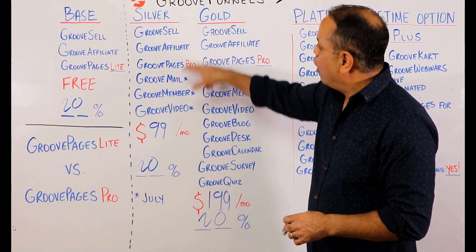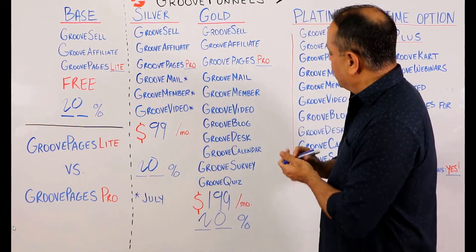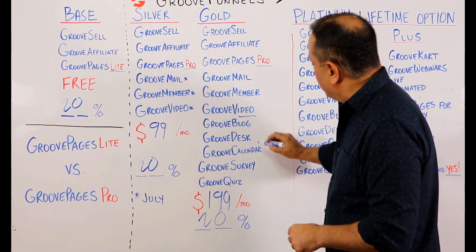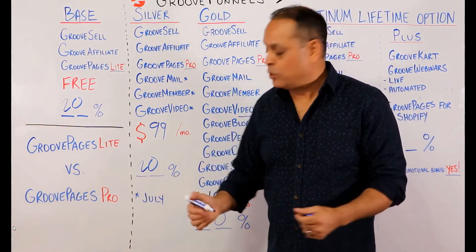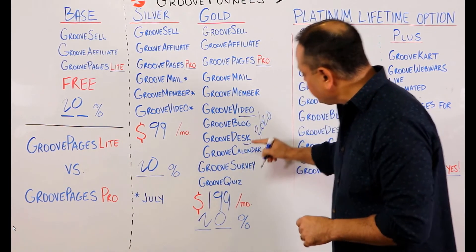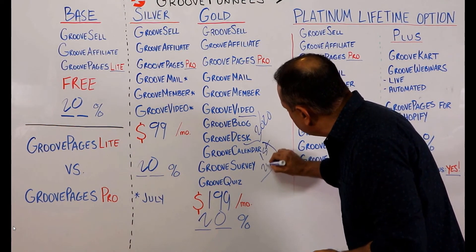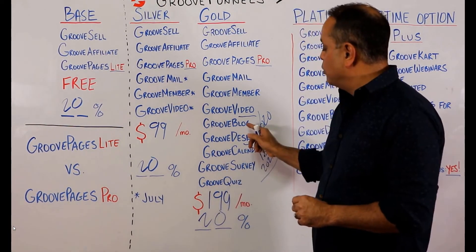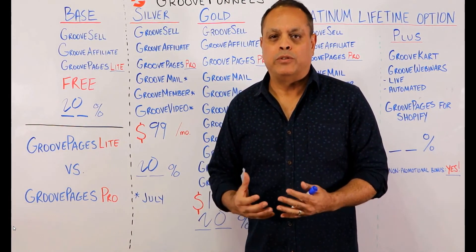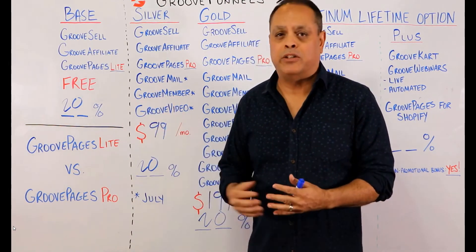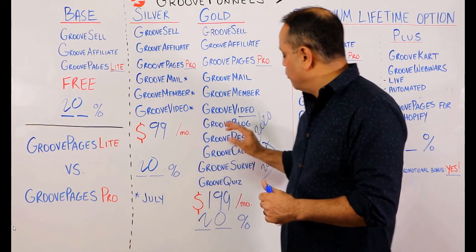All of GrooveFunnels — GrooveMail, GrooveMember, GrooveVideo — is coming in July. GrooveBlog and GrooveDesk we're hoping to have ready by the end of 2020. GrooveCalendar, GrooveSurvey, and GrooveQuiz are targeted for the first quarter of 2021. We want to get you away from WordPress, so we're going to have a very robust blogging system. It will use some elements of GroovePages and support posts, updates, and excellent SEO. It won't have everything WordPress has, but you can still use WordPress with our platform.